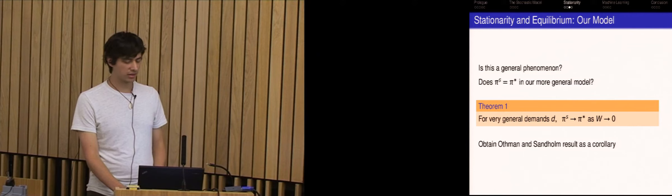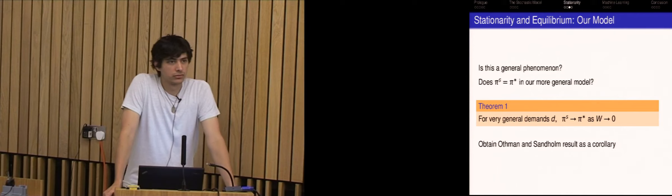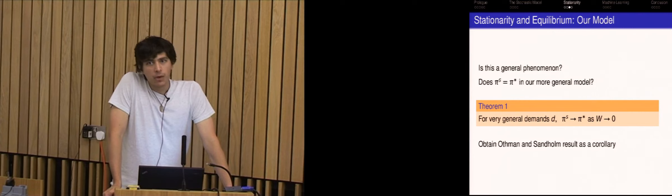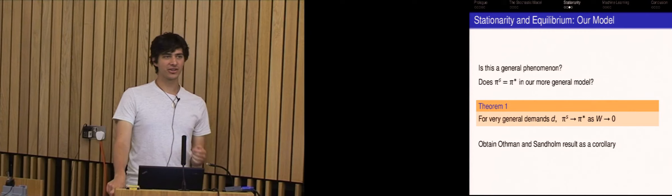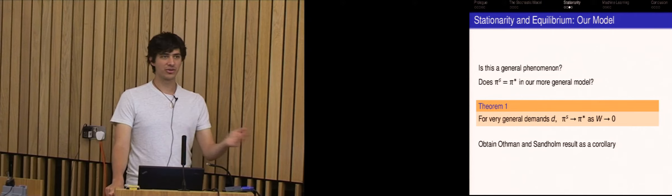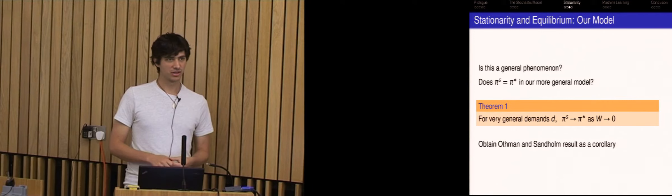This is for general demands. So we have a very general class of demand functions. Basically all we require is that you can't go broke. So if you have a wealth W, you can't invest so much so there's some state of the world that you lose your money and some basic monotonicity properties that if the price goes up you'll buy less and things like that. But very basic general things. And we still get this. So it is in that sense a very general phenomenon. And if you plug in the risk neutral traders, you get the result. There's a corollary. So if that's true, does that solve a computation of general equilibrium?